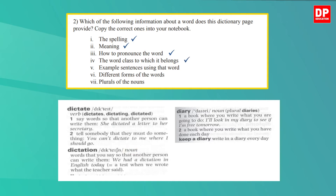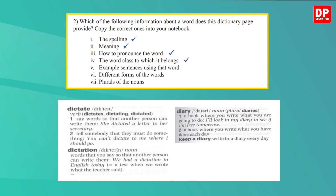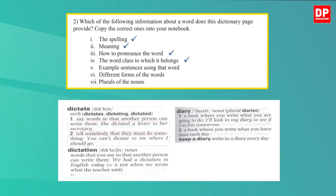What is the next one? An example sentence used in that word. Look at the two entries here — I'm sure you can see example sentences. For the word 'dictate' you can see two sentences: 'She dictated a letter to her secretary' and 'You can't dictate to me where I should go.' For each meaning there is an example sentence. So let's tick the fifth one too.